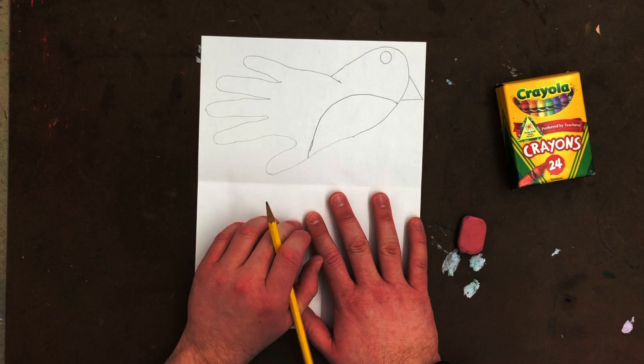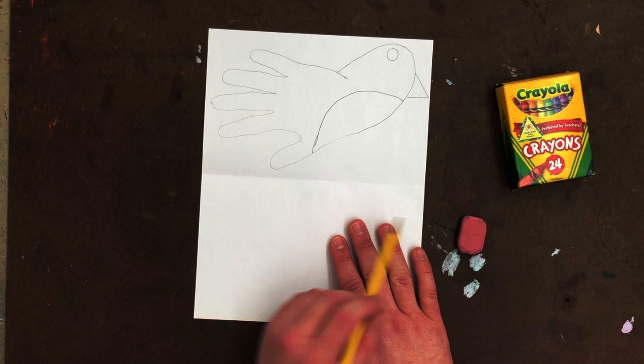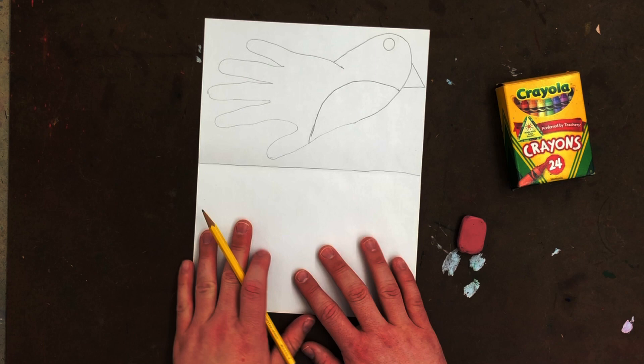Another thing we're going to do since we have our pencil before we do any coloring today is we need to make it so it looks like this bird is standing on a branch. That is going to be really easy. It's one of the reasons why we did the fold is we're going to draw a line right on the fold straight across. It doesn't have to be perfect. So if it wobbles a little bit that's okay.